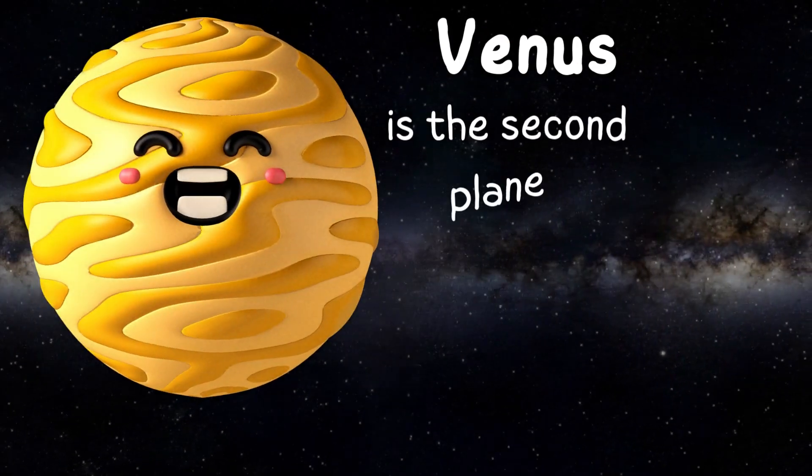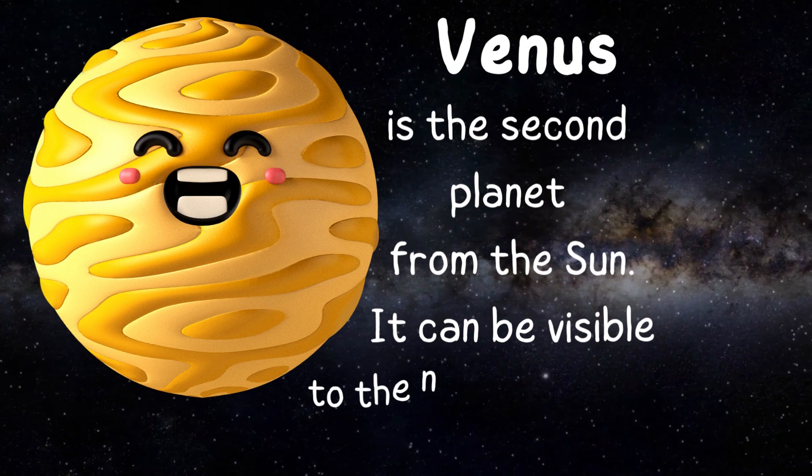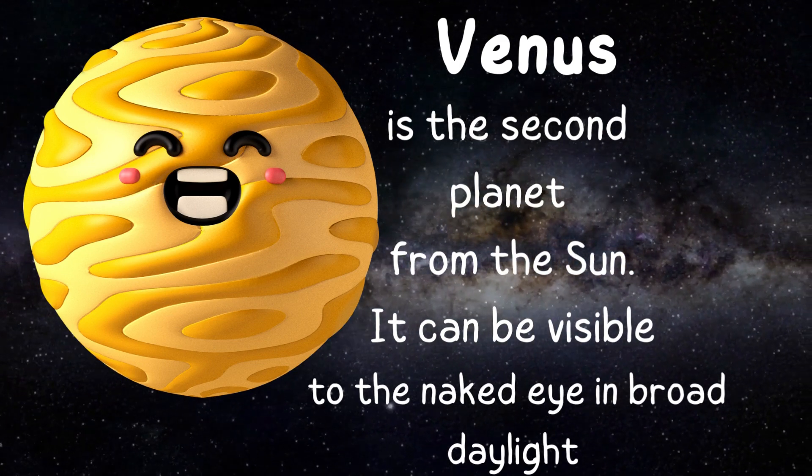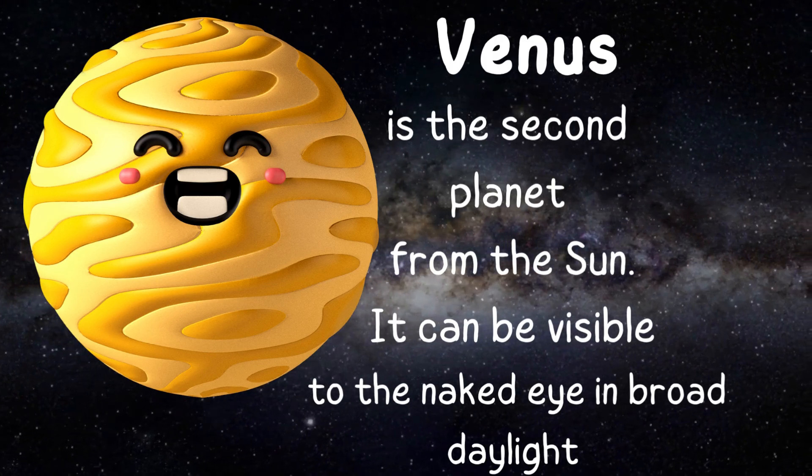Venus is the second planet from the sun. It can be visible to the naked eye in the night sky. It is also the hottest planet in the solar system.